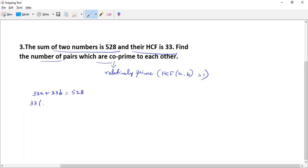Now I'll take 33 as common: 33 multiplied by A plus B equals 528. So A plus B equals 528 divided by 33. Since 33 times 16 is 528, we get A plus B equals 16.